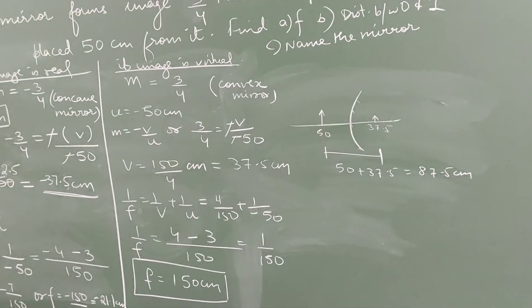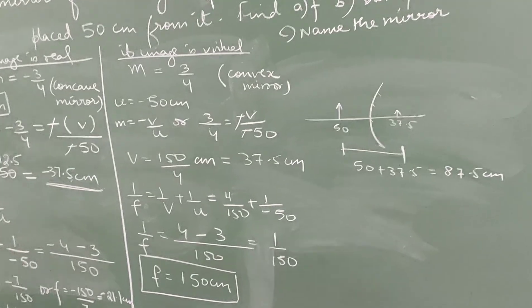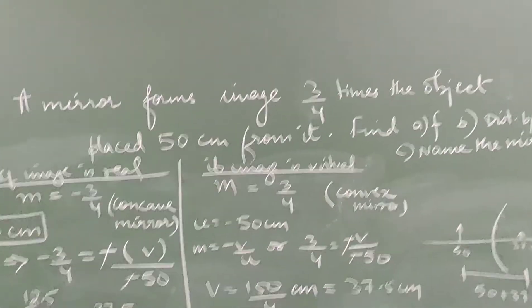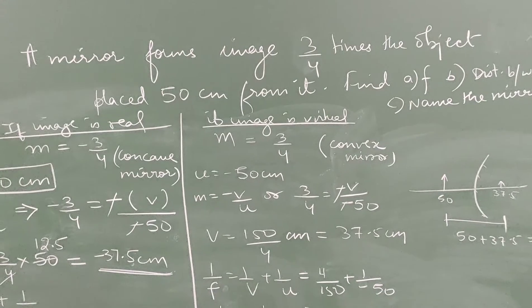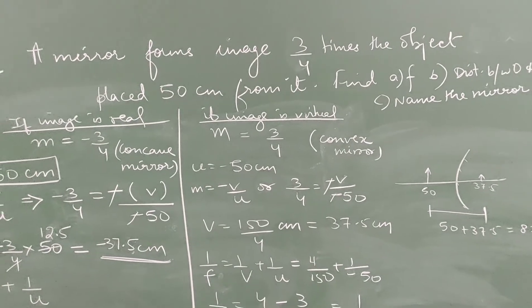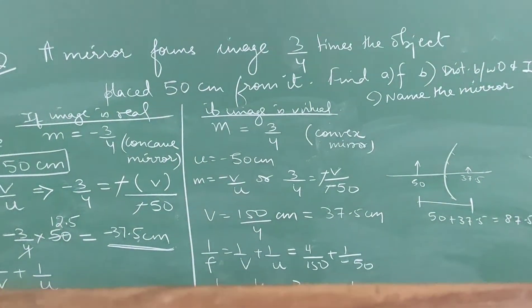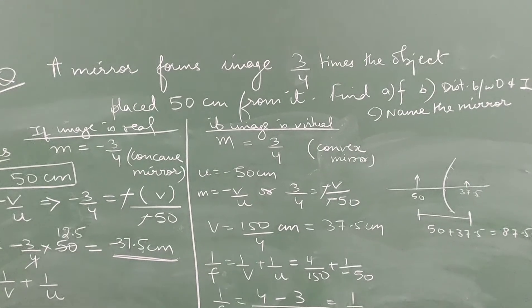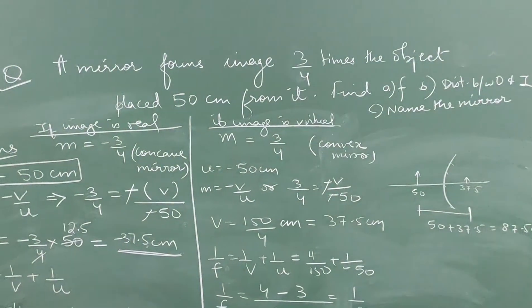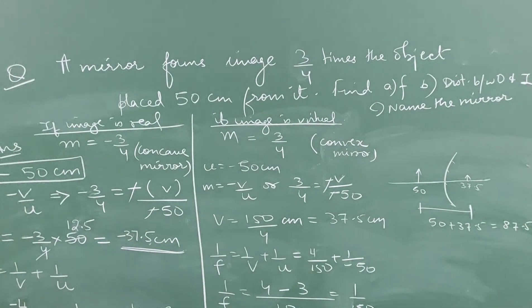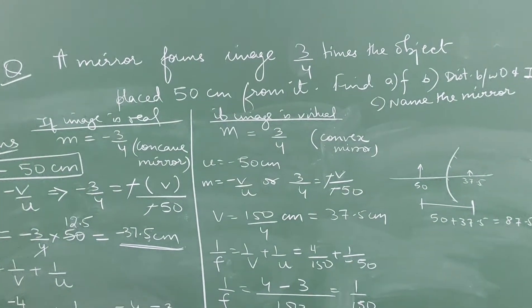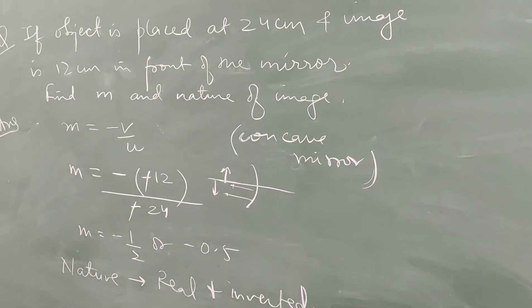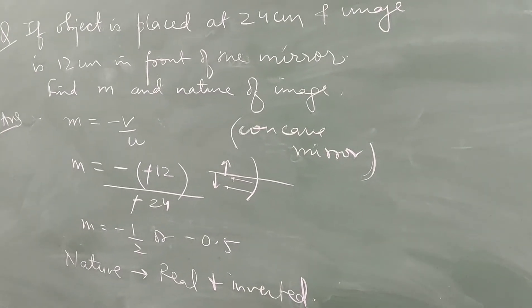In this question, both types of mirrors had to be considered because the type of image was not given — only that image is 3/4 times the object, without specifying real or virtual.